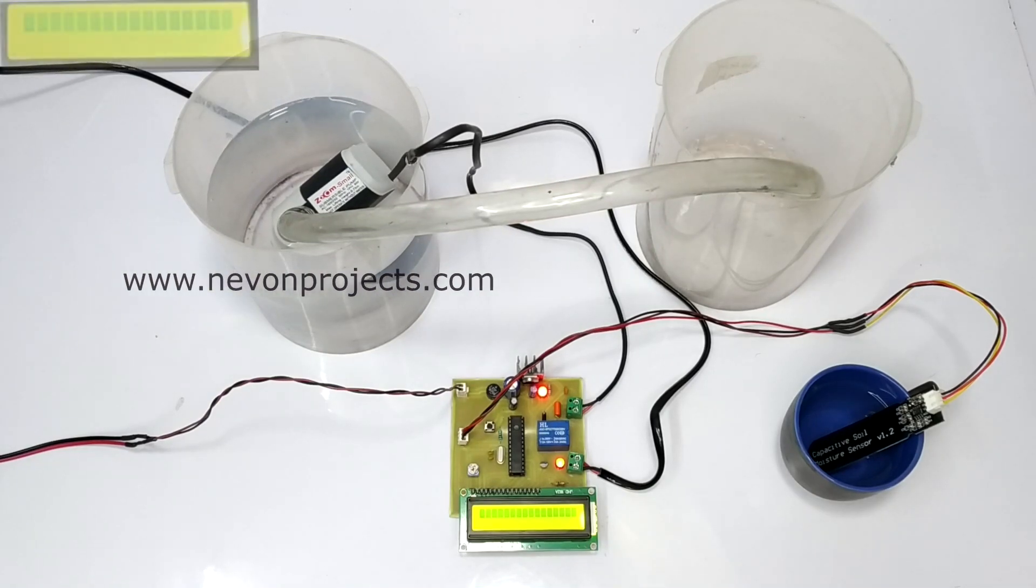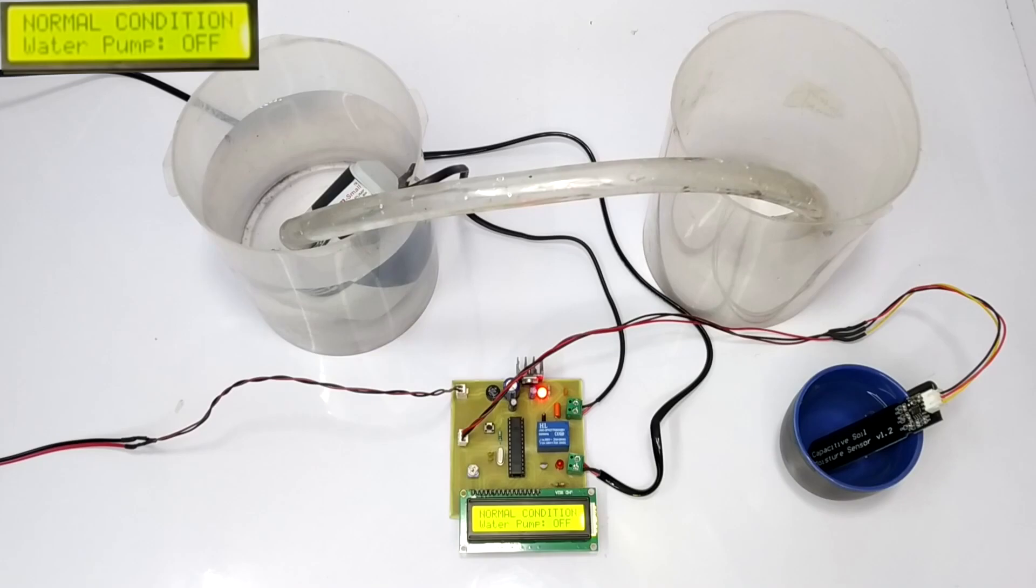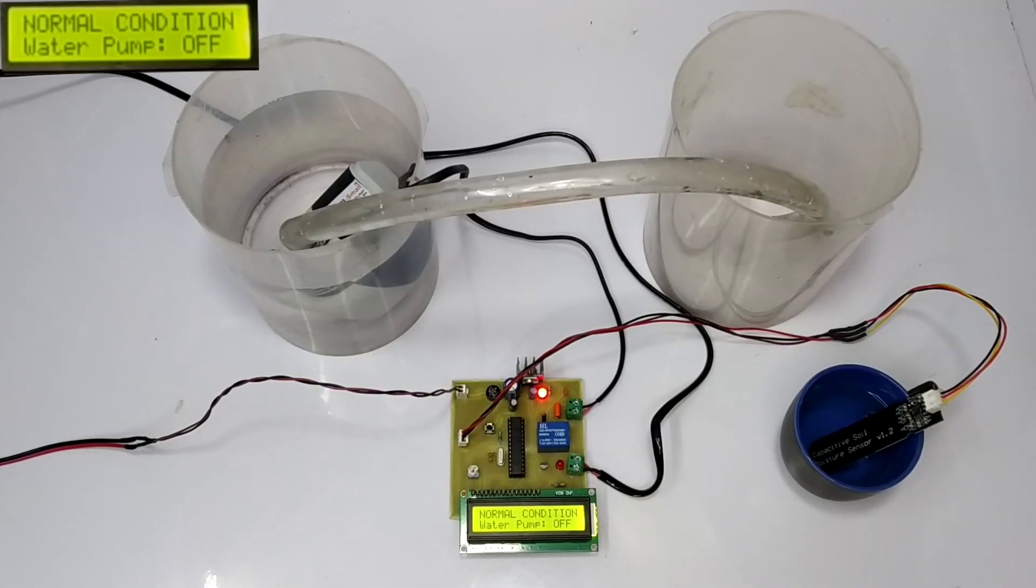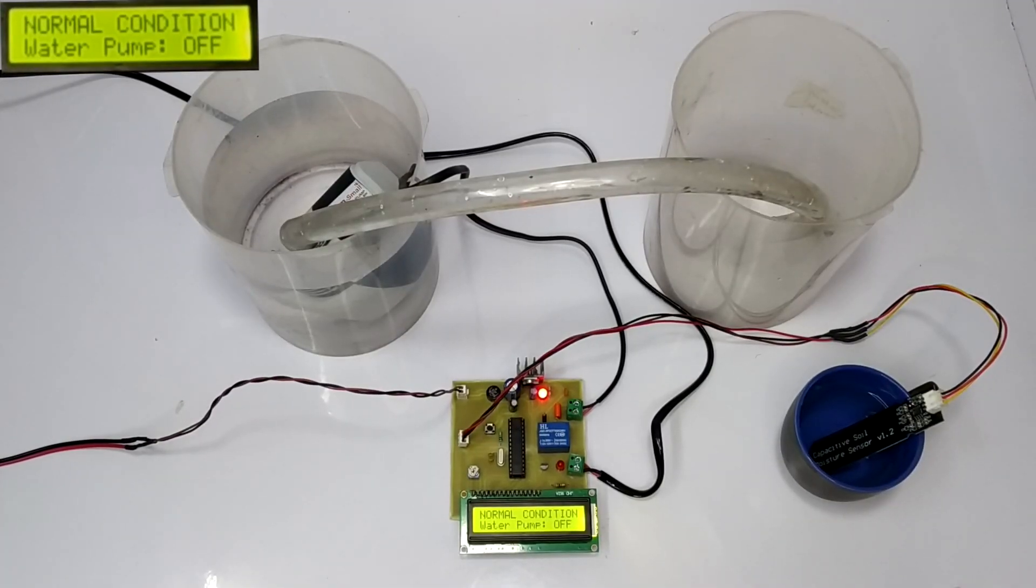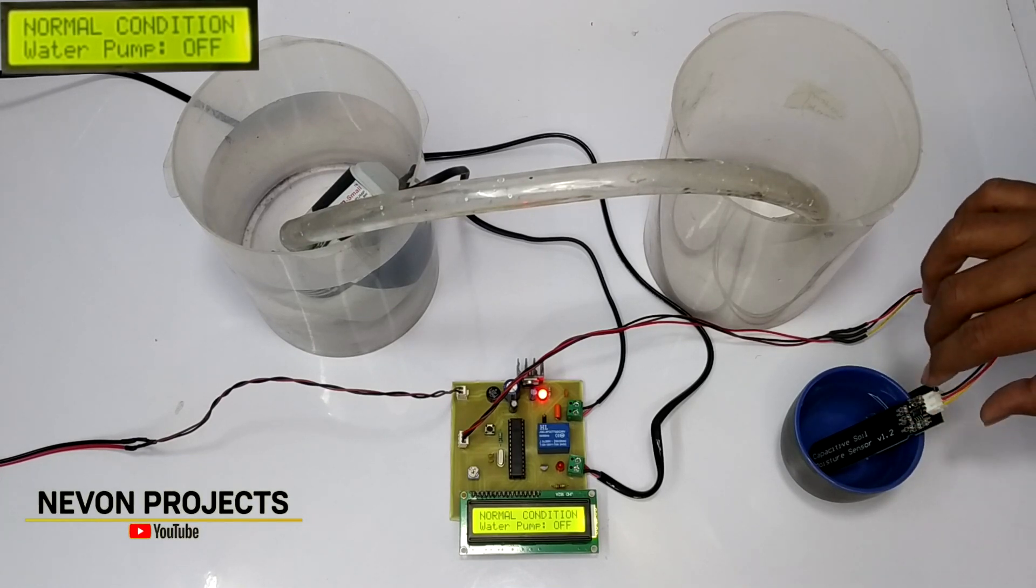So, let's begin with the working. Initially, it's showing normal conditions and the water pump is off. The water pump is off as the soil moisture sensor is dipped in the water, which indicates enough moisture in the soil.